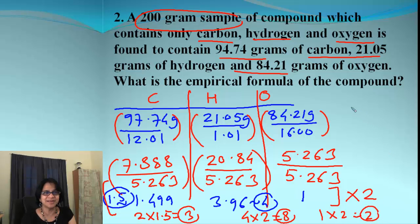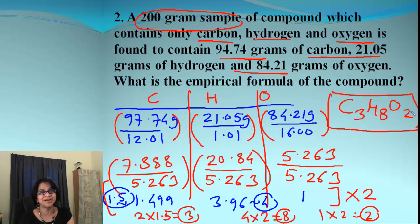So we got the proportion so it's carbon 3 hydrogen 8 and we got oxygen 2. There we go. So we ended up finding the empirical formula of the compound by our simple song. You want to sing it again?